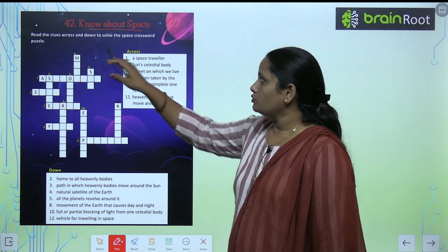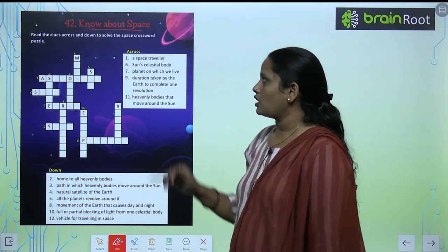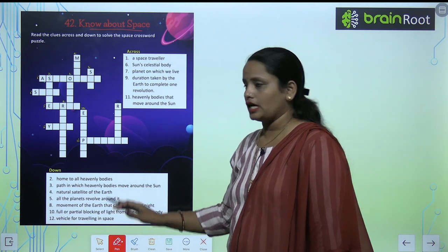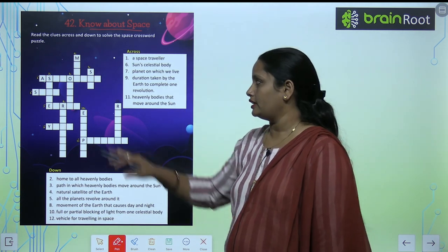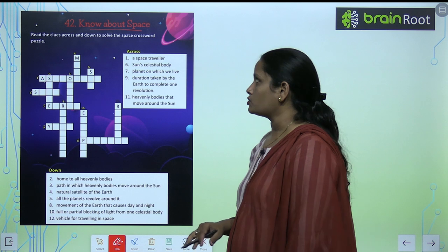So here we have to read the clues across and down. Across vale clues ko parna hai, down vale clues ko parna hai, and then we have to fill this crossword.